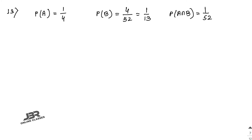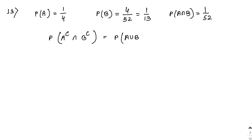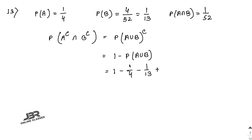The required probability is neither a spade nor a queen — that means A complement intersection B complement, which equals (A union B) complement = 1 − P(A union B). So it's 1 − (1/4 + 1/13 − 1/52), and the answer is 9/13.